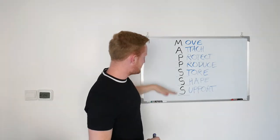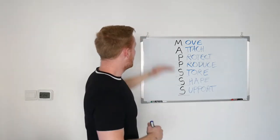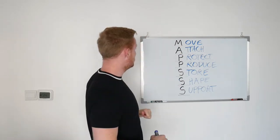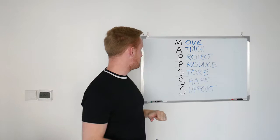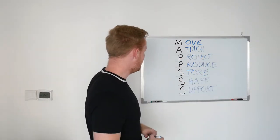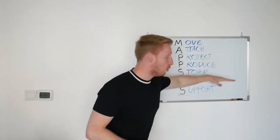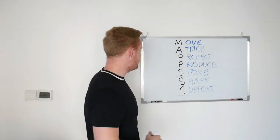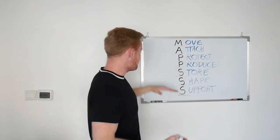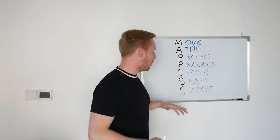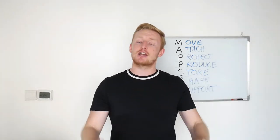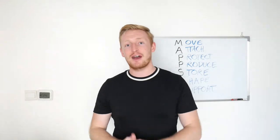We've got M-A-P-P-S-S-S or MAPS. Movement is possible because muscles attach to bone. Organs are protected by the bones. The bones produce white blood cells to keep us healthy. They also act as a store of calcium and minerals that we use around the body. They help give everyone their unique shape. And in sport, bones offer support. And that's that. MAPS, the seven functions of bones. Hope that helped. I'll see you next time.